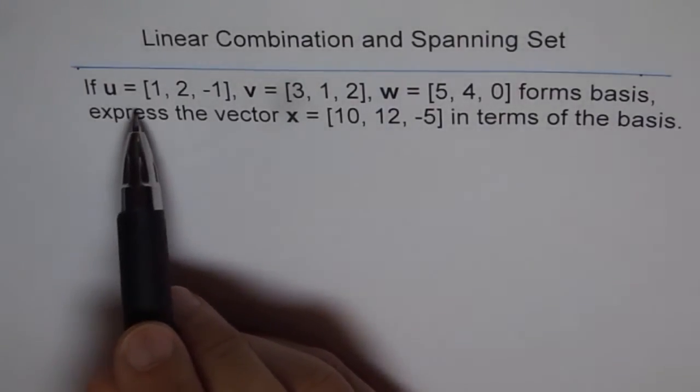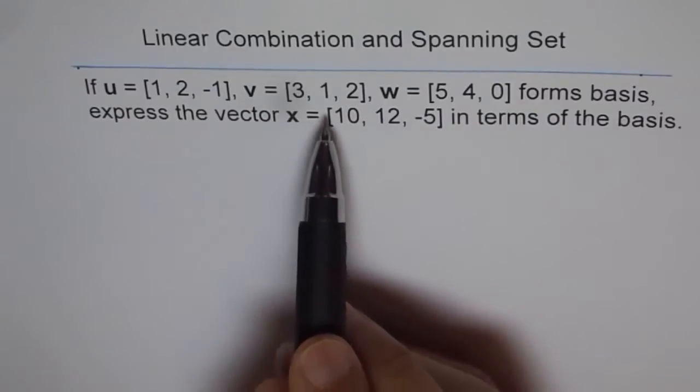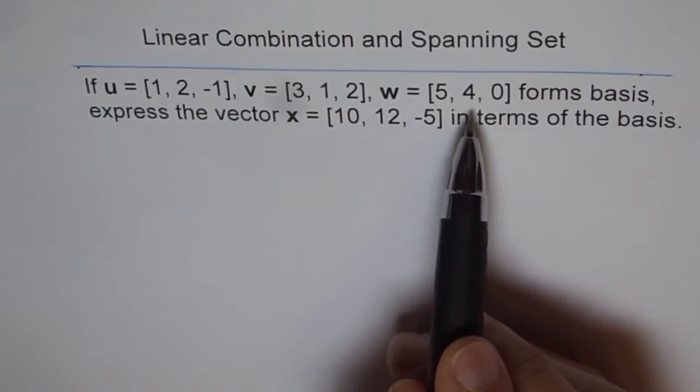if vector u equals 1, 2, minus 1, v equals 3, 1, 2, and w equals 5, 4, 0,